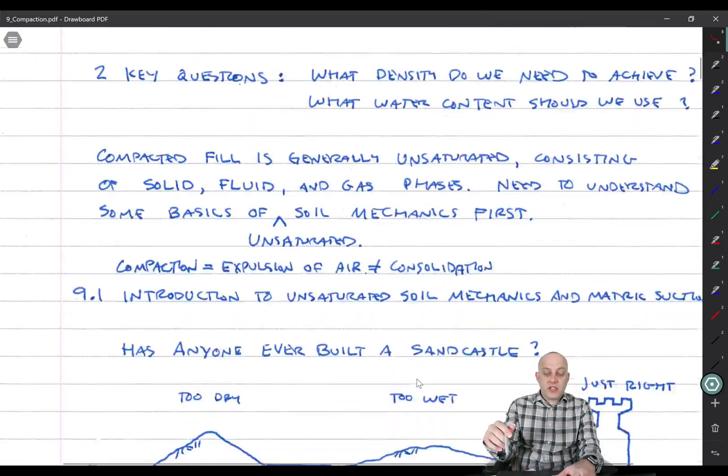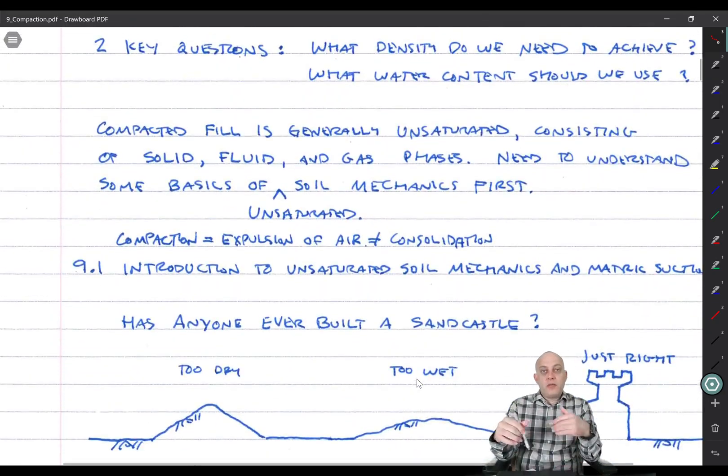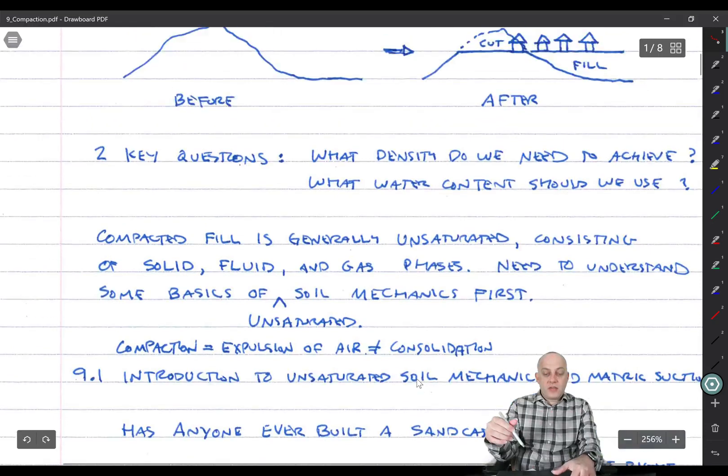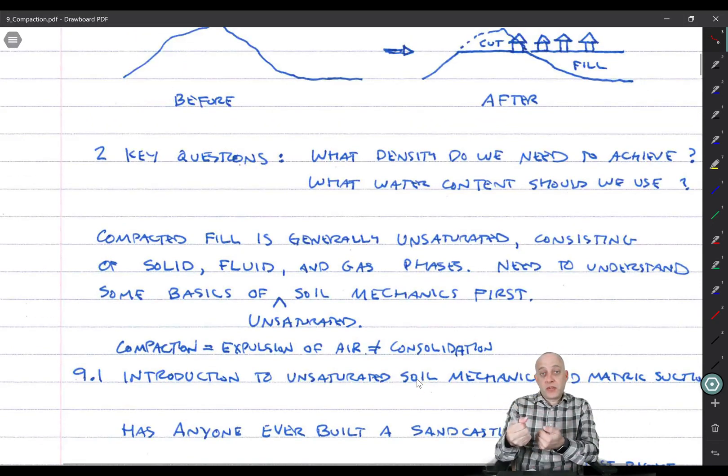So compacted fill is generally unsaturated. What we do is we'll cut the soil or go get it from what's called a borrow source. That's where we're borrowing soil. And then condition it with water to bring it to some desired water content, and then compact it by rolling heavy equipment over it or using vibratory compaction to make it denser. So it consists of solids, fluids, and gases all together.